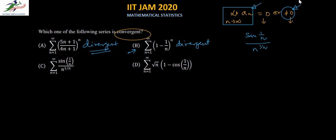We cannot directly apply the divergence test here, because as n tends to infinity, 1/n tends to 0, the denominator n^(1/n) tends to 1, and the numerator sin(1/n) tends to 0. So the limit is 0, which is inconclusive. We need to test this differently.